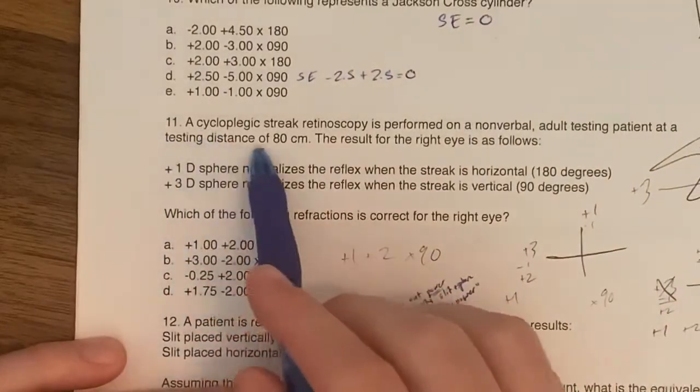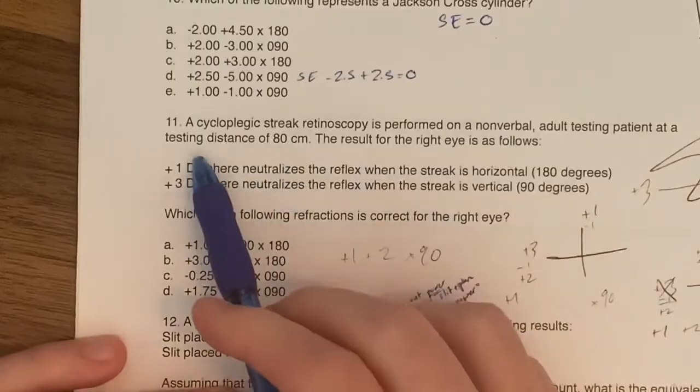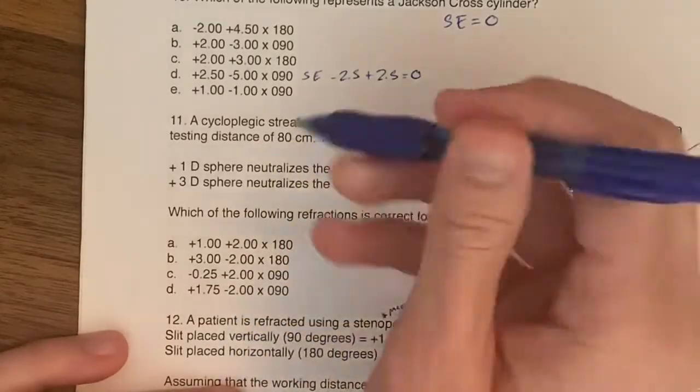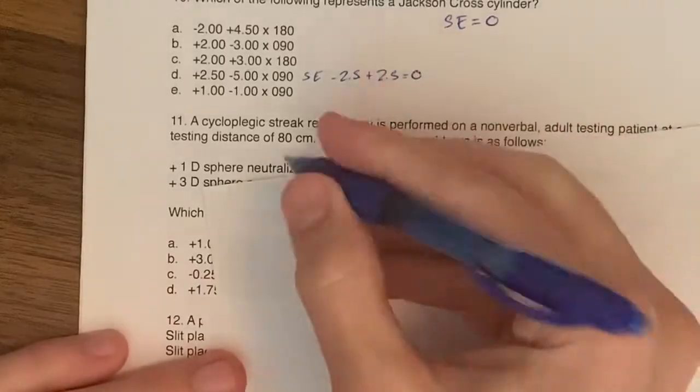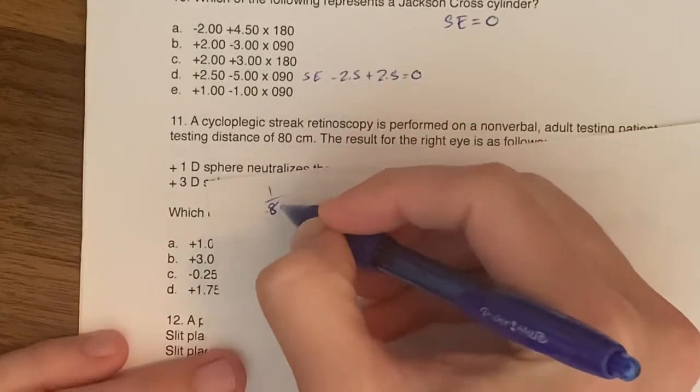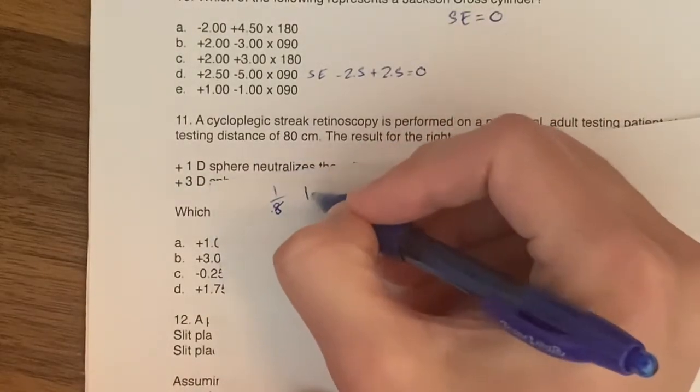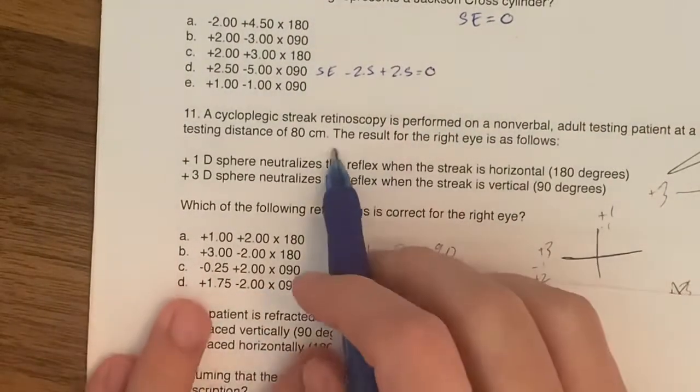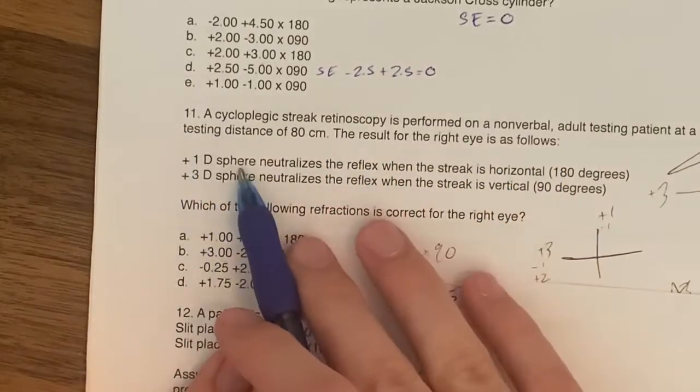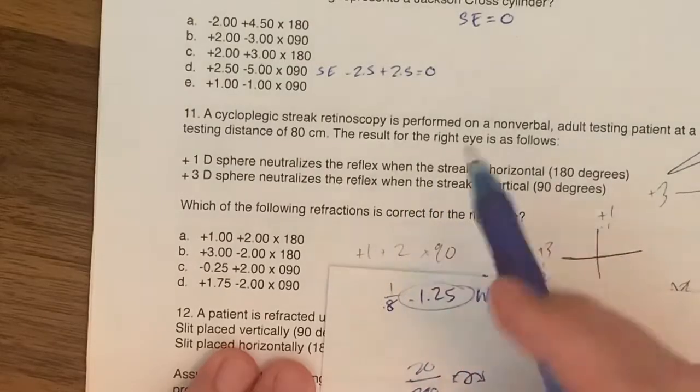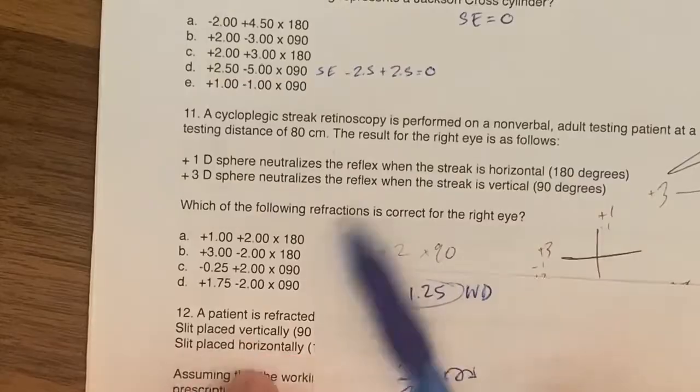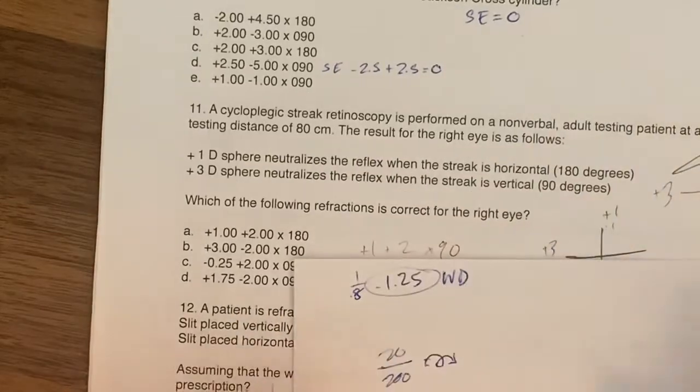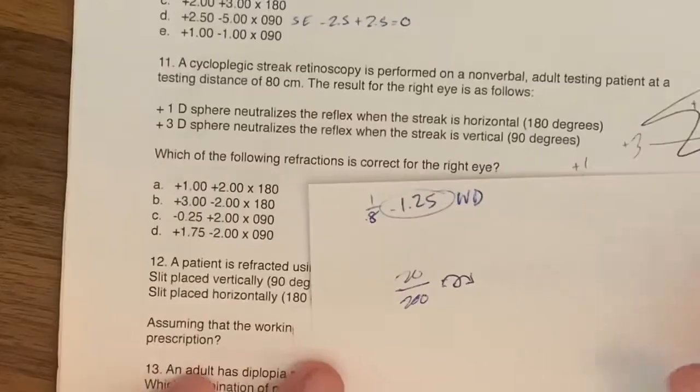Number 11, a cycloplegic streak retinoscopy is performed on a nonverbal adult testing patient at a testing distance of 80 centimeters. That's our working distance. We'll deal with that later. We can go ahead and convert it into power if we want, one over 0.8, so this is 1.25. We'll subtract that at the end. That's our working distance. The result for the right eye is as follows: 1 diopter sphere neutralizes the reflex when the streak is horizontal and 3 diopter sphere neutralizes the reflex when the streak is vertical. Which of the following refractions is correct for the right eye?